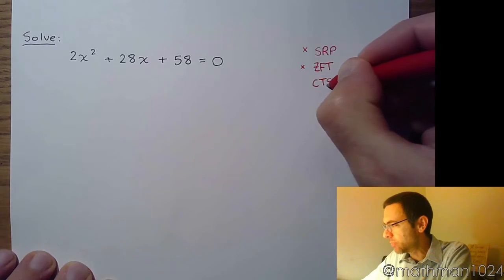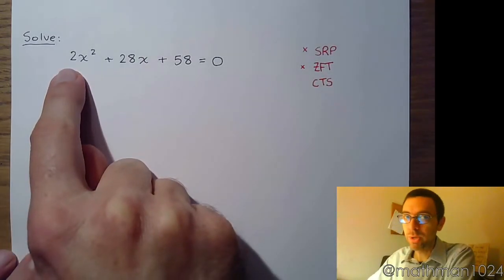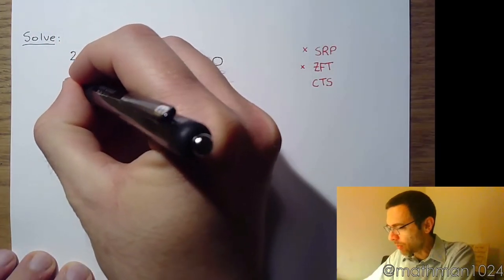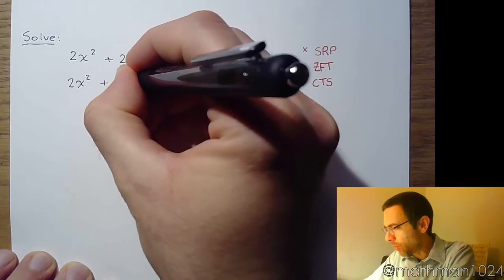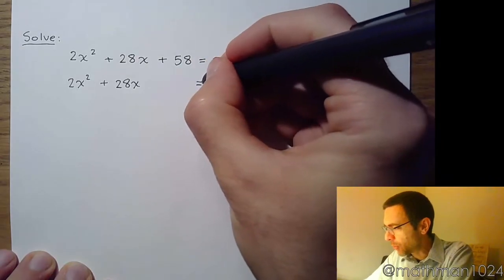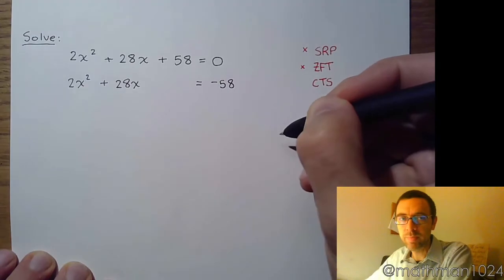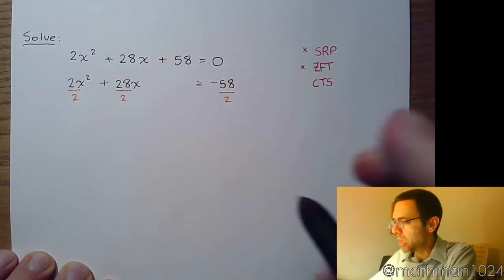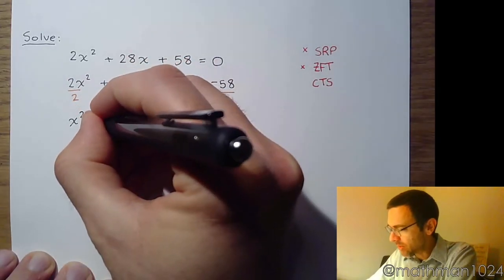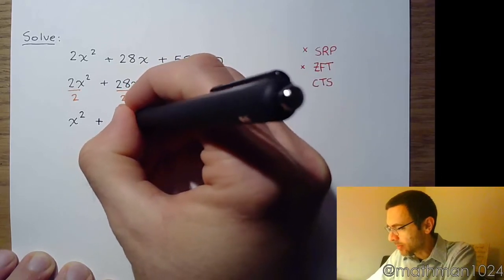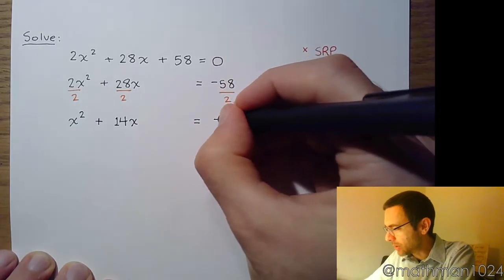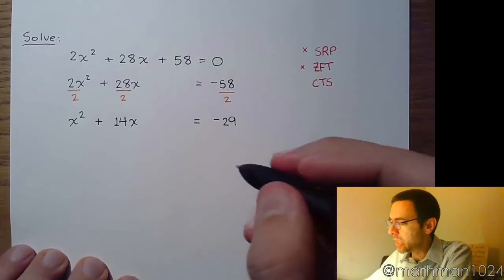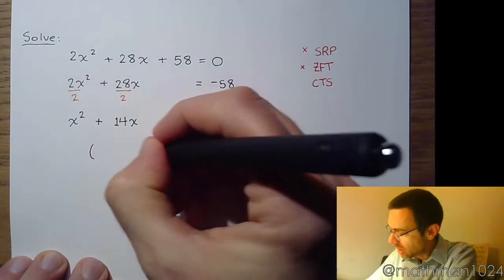What about completing the square? For completing the square, we need the leading coefficient to be 1. First, move the constant to the other side. Then divide all terms by the leading coefficient of 2, giving us x squared plus 14x equals negative 29. This is a perfect setup — a coefficient of 1 and an even middle term. We need to find a number to fill the gap so the trinomial factors with the exact same two factors.